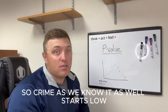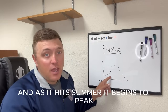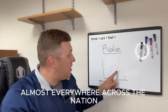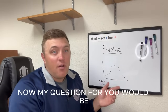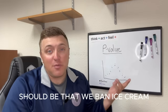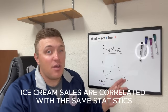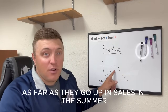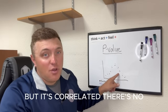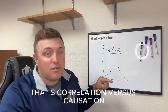Now we have to add crime into the picture. Crime, as we know, starts low — a lot of people aren't out committing crimes in the winter — and as it hits summer, it begins to peak. Crime rates go up in the summer almost everywhere across the nation, then come back down as it gets into those colder months again. So my question would be: do ice cream sales cause crime? Maybe we should ban ice cream. Obviously we know that's not going to work. Yes, ice cream sales are correlated with crime — both go up in summer and down in winter — but there's no causation. Ice cream sales are not actually making the crime rate go up. That's correlation versus causation.